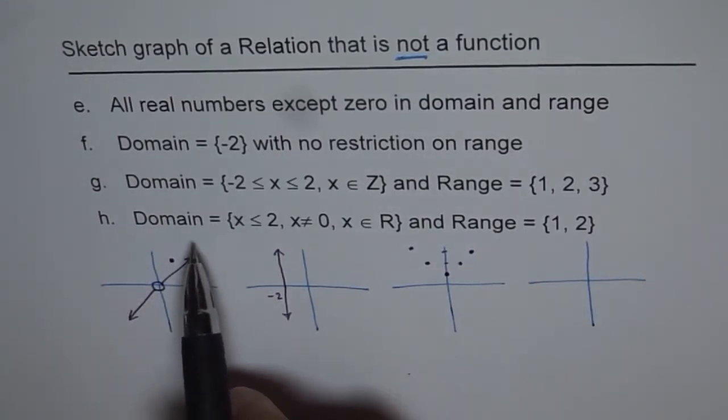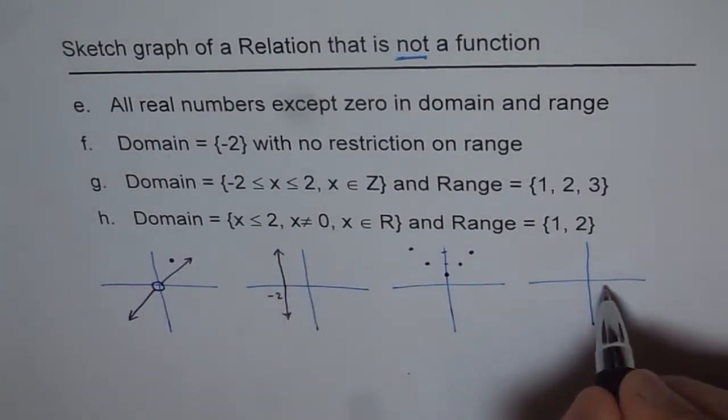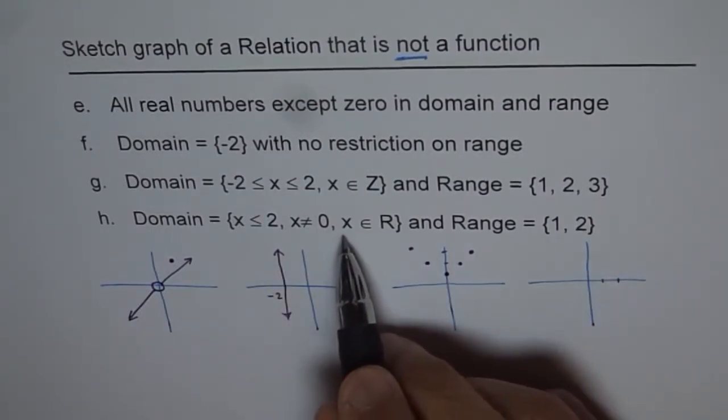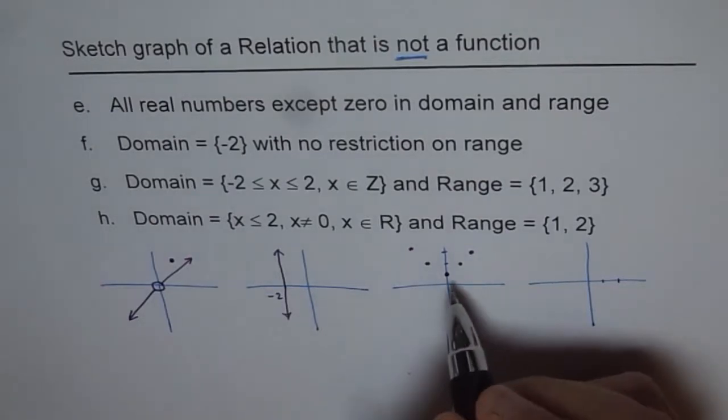The last one is that the domain is x less than 2 but not equal to 0. So that means we are here. This is 1, this is 2 but not equal to 0, and range is all real numbers.